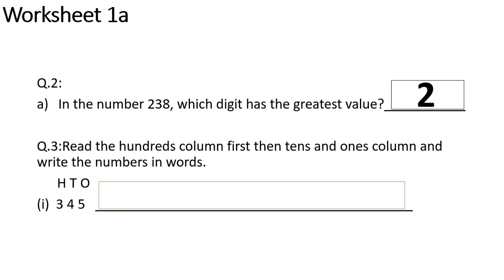Question number 3: read the hundreds column first, then tens and ones column, and write the numbers in words. Students, when we write numbers in words, we do not use digits. Instead, we write spellings. For example, this is 345 — you will write it starting with a small letter. Part 2 is your homework.